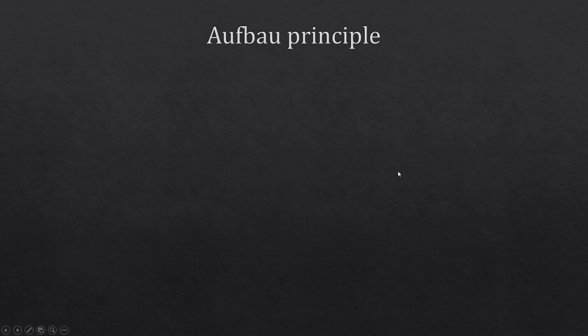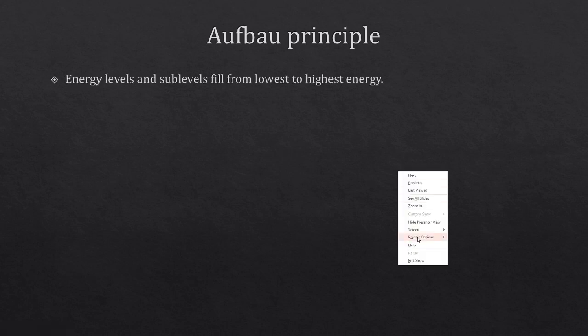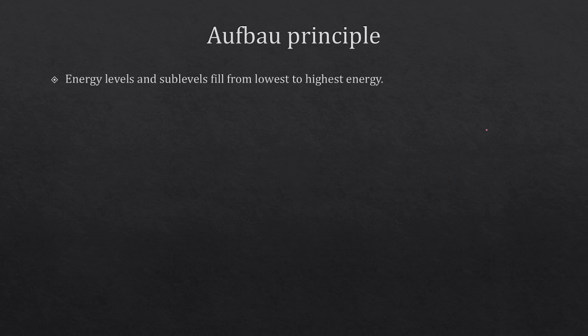Now let's talk about how we know where to put our electrons. To do this we need another rule. We talked about the Pauli exclusion principle in our last video, and in this one we want to talk about the Aufbau principle. So energy levels and sub-levels fill from the lowest to the highest energy.